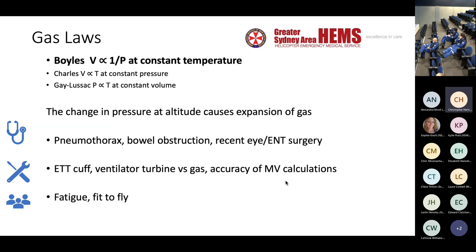Certainly for longer distance transfers using fixed wing, you'd want to check your ET cuff pressures and think about your equipment. Ventilators can either be turbine or gas driven, with pros and cons of both. If it's a gas-driven ventilator, you need a supply of pressurized gas. The advantage of a turbine-driven ventilator is that you don't necessarily need an oxygen supply to drive it, although you do need a power supply.